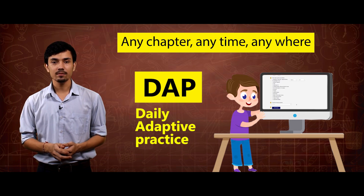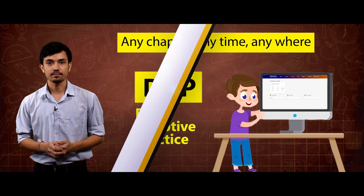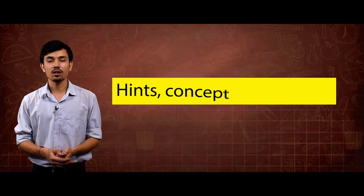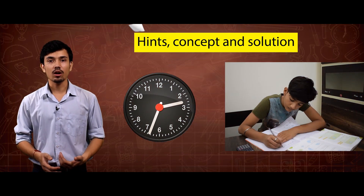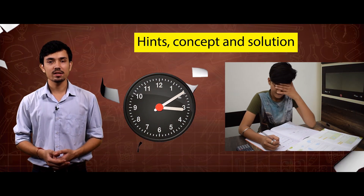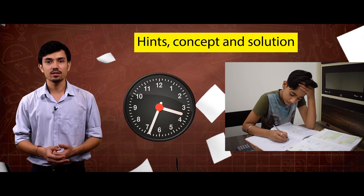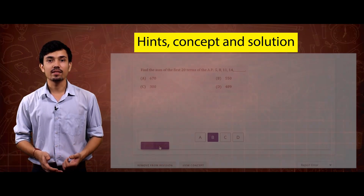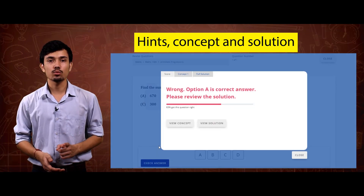It's already stored — just one click is all that's required. Second: hints, concept, and solution. When you solve a DPP, there is always one particular question that eats up your entire energy. At that odd hour, you need just one hint — we have that for you.